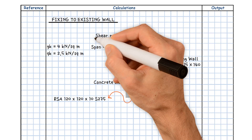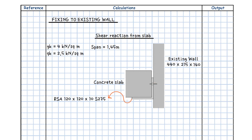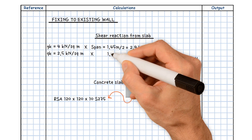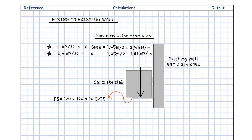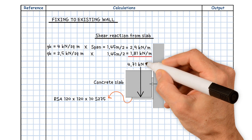First, let's find the shear reaction from the slab. The dead slab reaction on the support steel angle equals 4 kN/m² times 1.45 m, which equals 2.9 kN per metre. The imposed slab reaction load equals 2.5 kN/m² times 1.45 m, which equals 1.81 kN per metre. So the total reaction from the slab equals 2.9 plus 1.81, which equals 4.71 kN per metre.